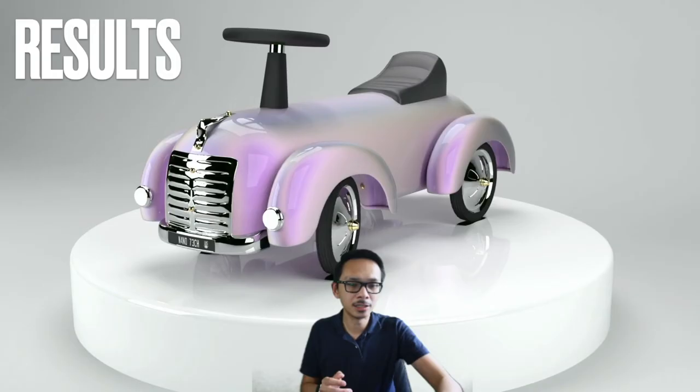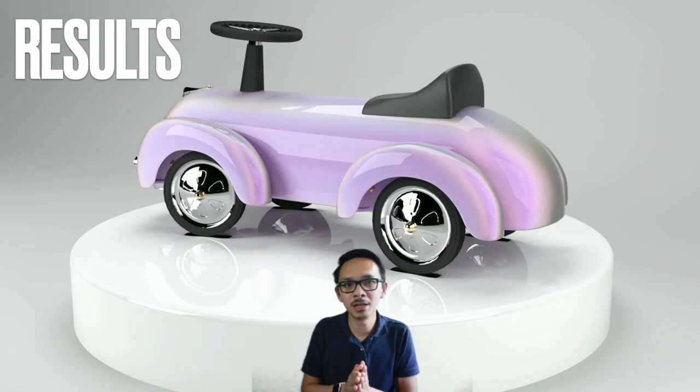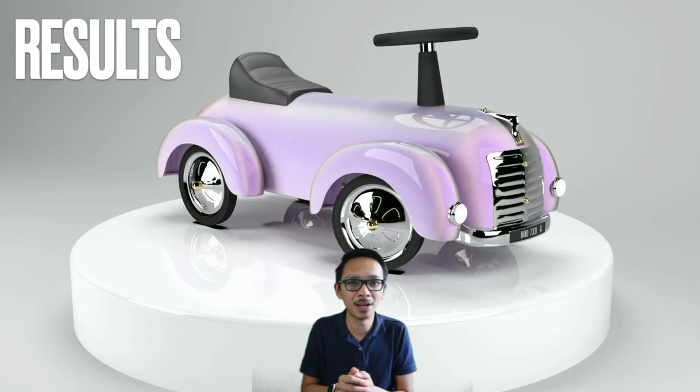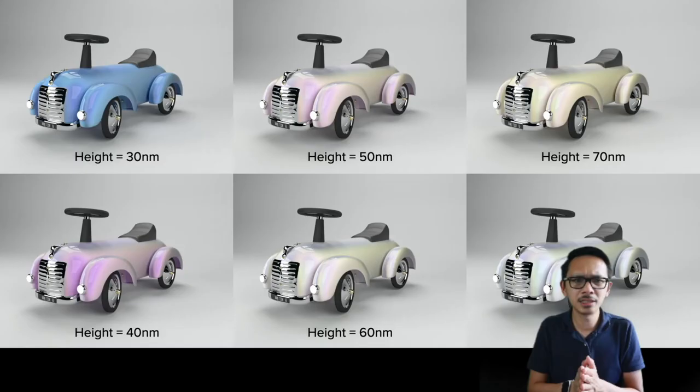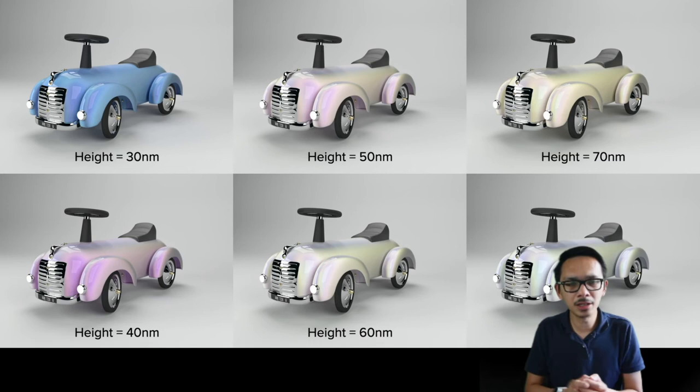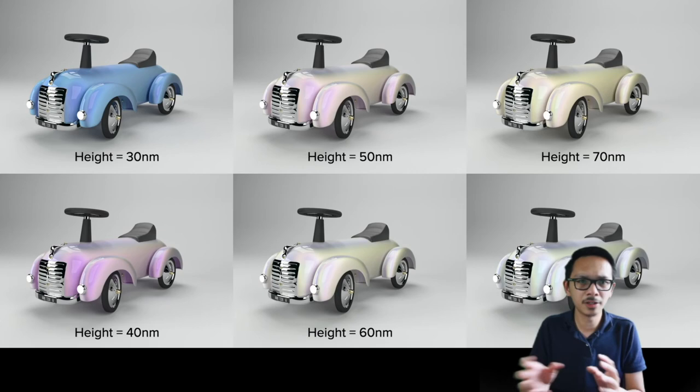This is the first glimpse of the results. This is the body of a toy car coated with the plasmonic color. It shows the angular dependency — the color changes depending on the viewing angle. These are the rendered images for the hole and disc array with separation heights from 30 nanometers to 80 nanometers, showcasing how changes in configuration affect color appearance.